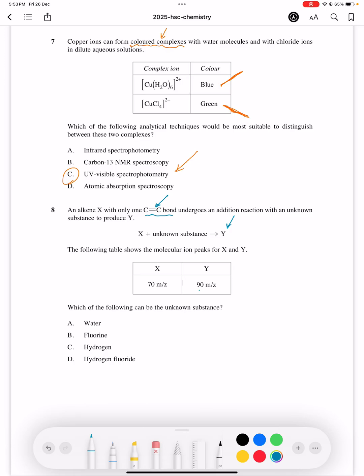Our HSC chemistry question of the day reads: an alkene X with only one double carbon-carbon bond undergoes an addition reaction with an unknown substance to produce Y. The following table shows the molecular ion peaks for X and Y. Which of the following can be the unknown substance?